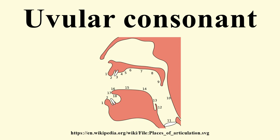The uvular trill is used in certain dialects of French, German, Dutch, Portuguese, Danish, Swedish, and Norwegian, as well as sometimes in modern Hebrew, for the rhotic phoneme. In many of these it has a uvular fricative as an allophone when it follows one of the voiceless stops P, T, or K at the end of a word, as in the French example 'maître', or even a uvular approximant.